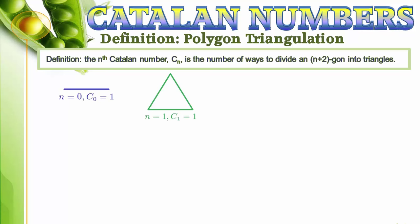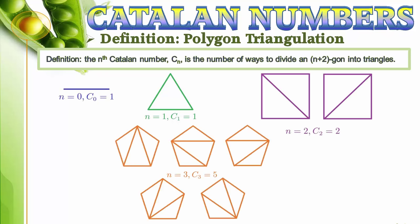For n equals 1, there is one way to divide a 3 gone into triangles. For n equals 2, there are 2 ways. For n equals 3, there are 5 ways. And for n equals 4, there are 14 ways.